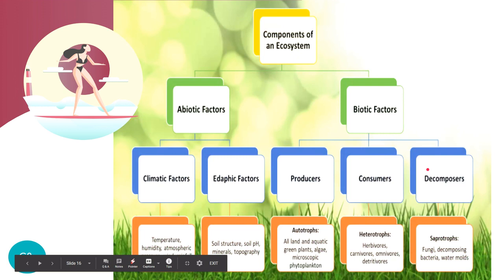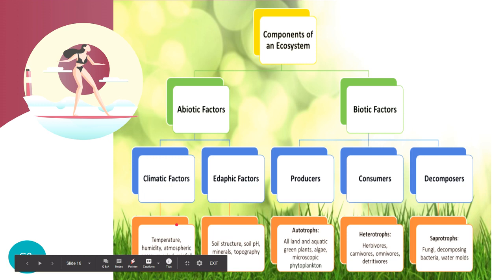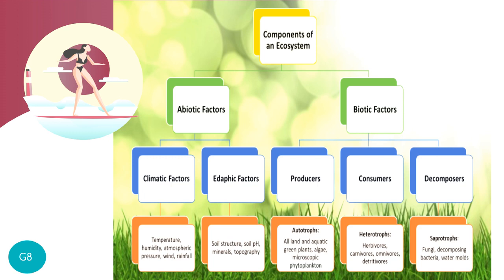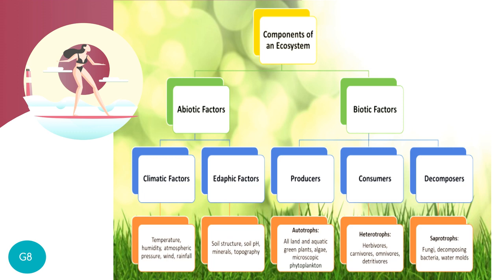Abiotic factors include climatic factors such as temperature, humidity, atmospheric pressure, wind, and rainfall, as well as edaphic factors — those are the soil or ground features — such as soil structure, soil pH, minerals, and even the topography of the ecosystem.